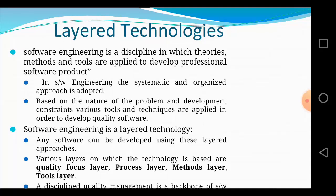The next topic is Layer Technology. Software engineering is a discipline in which theories, methods, and tools are applied to develop professional software products. A systematic and organized approach is adapted based on the nature of the problem and development constraints. Various tools and techniques are applied to develop quality software. Software engineering uses a layered technology approach with four layers: quality focus layer, process layer, method layer, and tool layer.